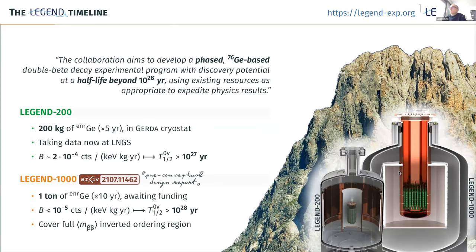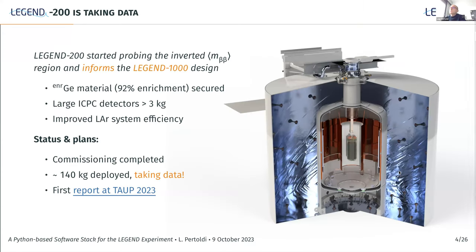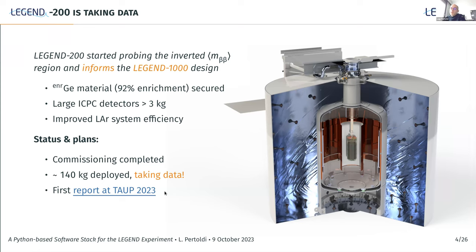The timeline of the experiment: at the moment we have a first phase called Legend 200, which consists of deploying 200 kilograms of germanium in the same cryostat infrastructure as the predecessor experiment GERDA at LNGS. The final phase would deploy one ton of germanium and reach half-life sensitivity above 10^28 years on the neutrinoless double beta decay half-life. Currently Legend 200 is taking data at LNGS; commissioning has been completed with 140 kilograms deployed. I leave here a link to a very recent report about first results on background and performance reported at the TAUP conference in Vienna.